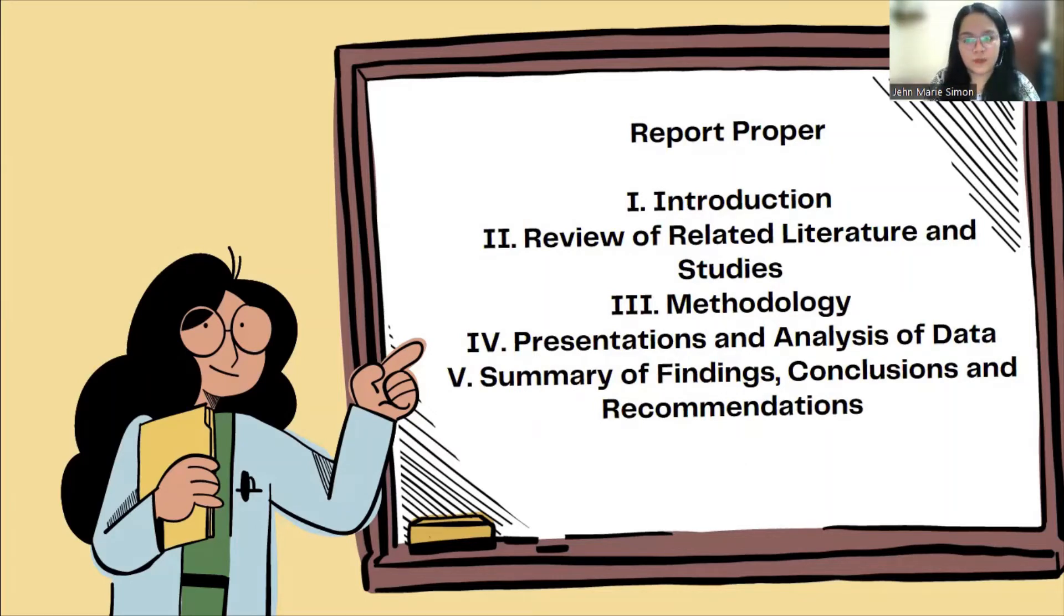Next is the report proper. This is the main part of your research paper. It has five parts. It includes the first one is the introduction. Two is review of related literature and studies. Third is the methodology. Fourth is the presentations and analysis of data. Fifth is the summary of findings, conclusions, and recommendations. Sometimes there are research papers that are in IMRAD form. IMRAD form is introduction, methodology, results, and discussion only.